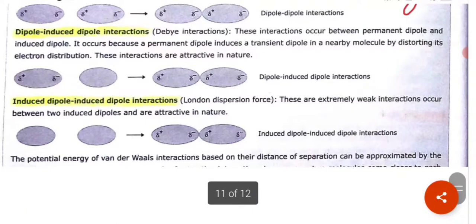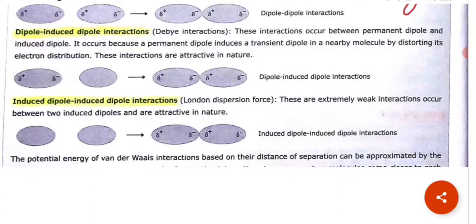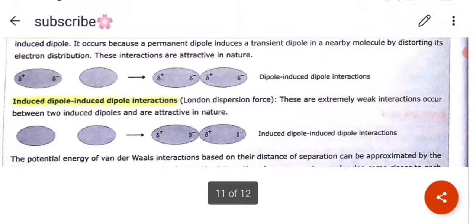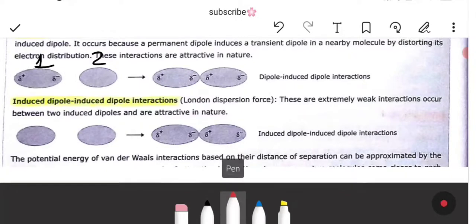Dipole-induced dipole interactions, also called Debye interactions, occur between a permanent dipole and an induced dipole. It occurs because a permanent dipole induces a transient dipole in a nearby molecule by distorting its electron distribution, and these are attractive in nature. So, if one molecule has a permanent dipole moment and a second molecule does not, the first induces a dipole in the second. The induced dipole moment depends on the dipole moment of the permanent dipole and the polarizability of the electrically neutral molecule.